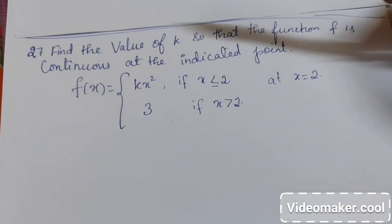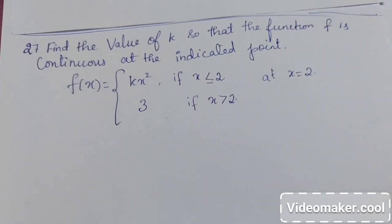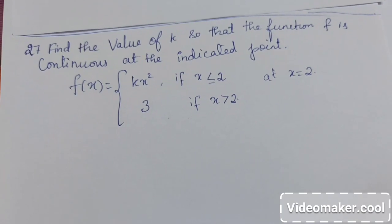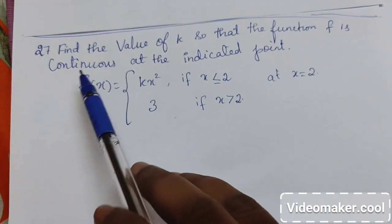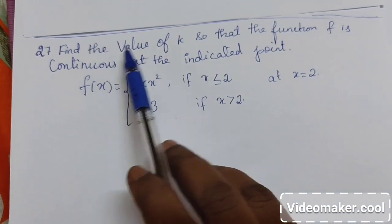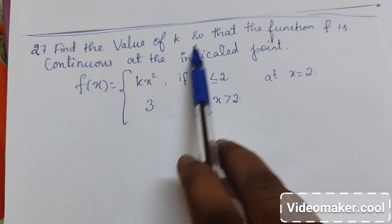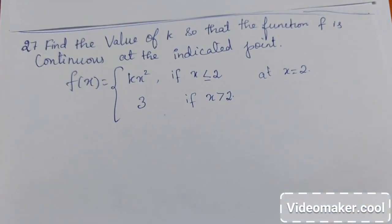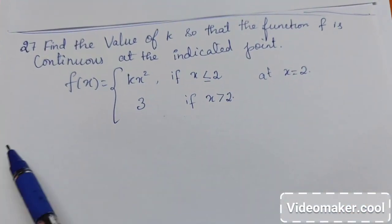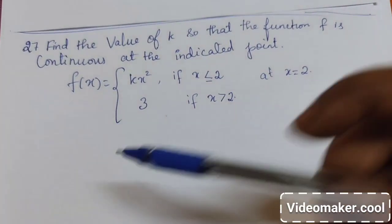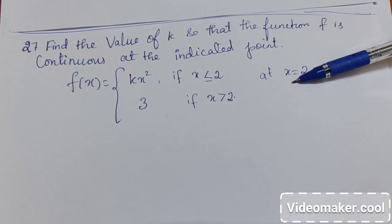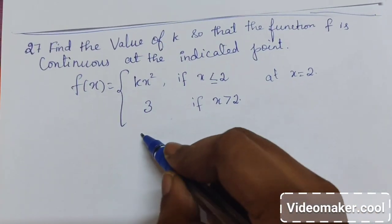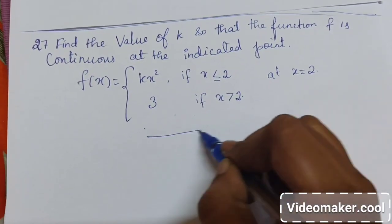Now we will discuss problem number 27 of exercise 5.1. Here they are stating: find the value of k so that the function f is continuous at the indicated point. The point given is 2. So we will see the domain of the function first.